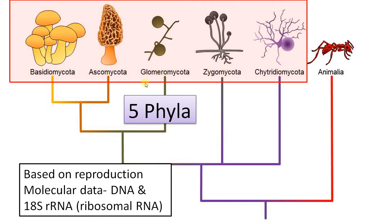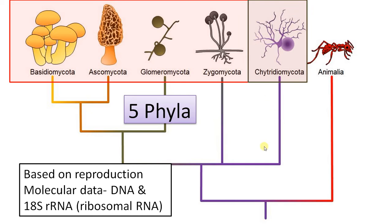On the basis of these criteria, true fungi are divided into five phyla: first, Chytridiomycota; second, Zygomycota; third, Glomeromycota; then Ascomycota; and Basidiomycota. Previously fungi were included under plants, but now we know that fungi are more closely related to animals in phylogeny than to plants.